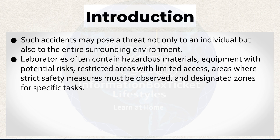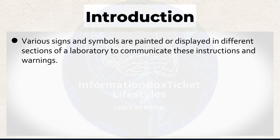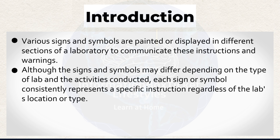Laboratories often contain hazardous materials, equipment with potential risks, restricted areas with limited access, areas where strict safety measures must be observed, and designated zones for specific tasks. These areas must be clearly indicated to ensure that everyone understands the situation, knows what actions are permitted, and works accordingly to maintain laboratory safety. Various signs and symbols are painted or displayed in different sections of a laboratory to communicate these instructions and warnings. Although the signs and symbols may differ depending on the type of lab and the activities conducted, each sign or symbol consistently represents a specific instruction regardless of the lab's location or type.